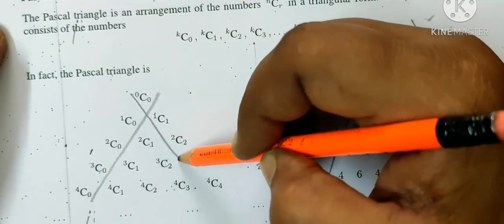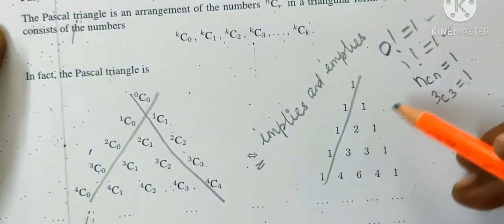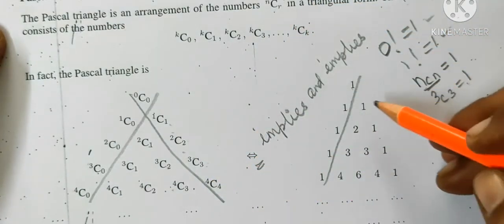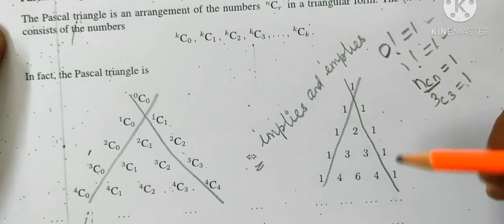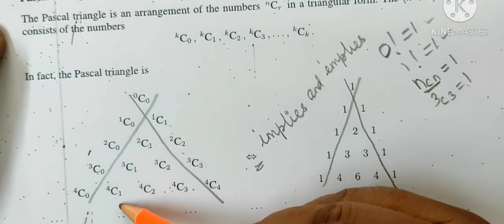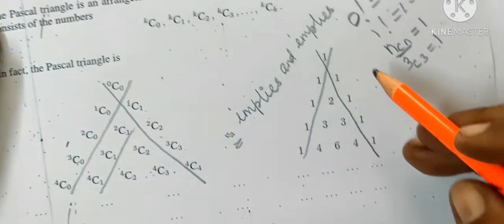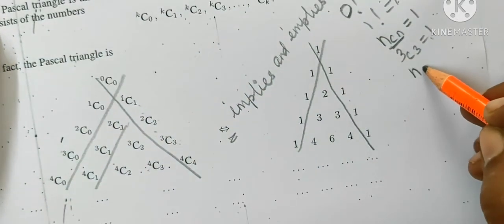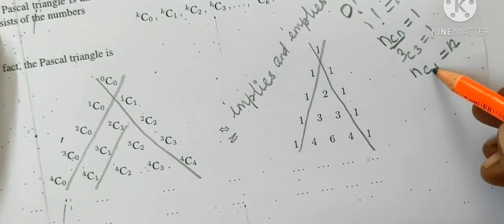In this case, it is the same: 3c3, 2c2, 1c1, 4c4. It is the ncn formula. The answer is equal to one. We know nc1 equal to n. This one is equal to n.